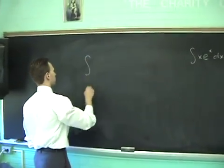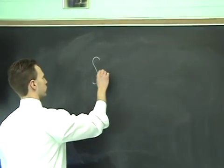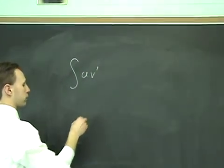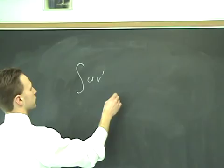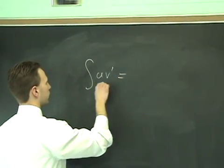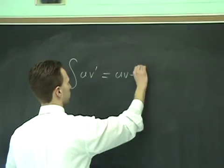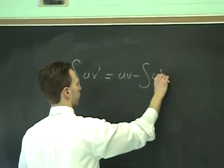The rule goes, you'll have a product of two functions, u and v-prime, where these two things are functions of x. The formula goes, the integral of this times this is uv minus the integral of u-prime v.